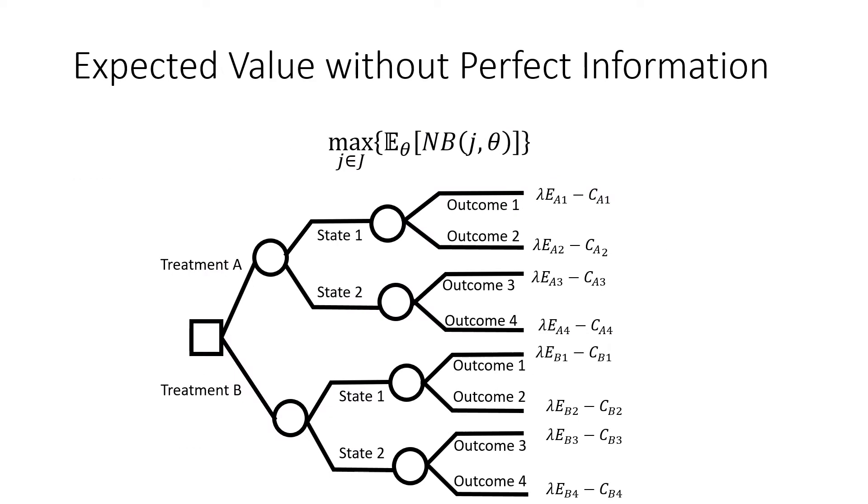So the expected value without perfect information is written as follows where we have two treatments, treatment A and treatment B, and it feeds into this decision tree where you face one layer of uncertainty and then another layer of uncertainty. And usually we fold this decision tree back and we pick the option which has the highest expected outcome.